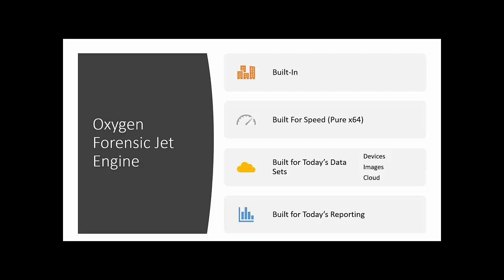For users of Detective as well, exporting a report with 30,000 pages takes a long time and you might run into issues — crashing, not able to produce that. Bringing this type of engine within our product helps eliminate that. Now you're able to export 30,000 or 40,000 pages of data as a PDF if you want. It allows you as the investigator to not have to worry about the processing, because time is definitely not on your side.